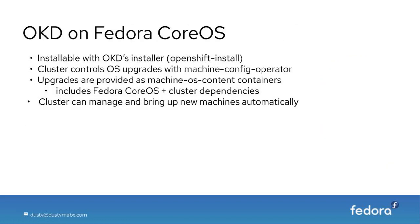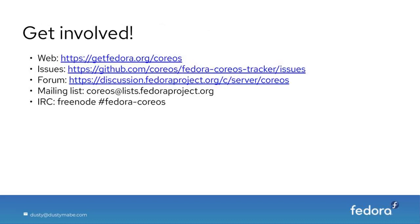OKD is installable with OKD's installer — the same one OpenShift uses. The cluster controls OS upgrades, which are provided as machine OS content containers, and the cluster can manage and bring up new machines automatically. To grab Fedora CoreOS or view releases, visit getfedora.org/coreos. For issues or design discussion, open tickets at github.com/coreos/fedora-coreos-tracker. We also have a forum for user questions, a mailing list, and a Fedora CoreOS channel on Freenode.